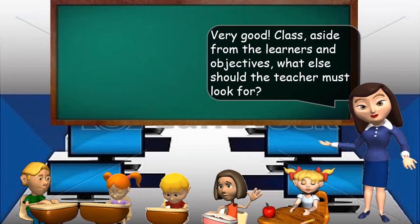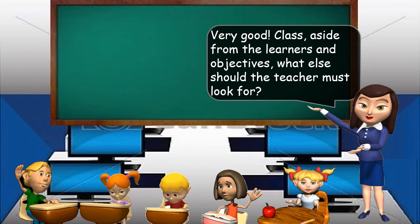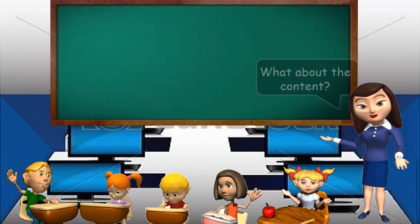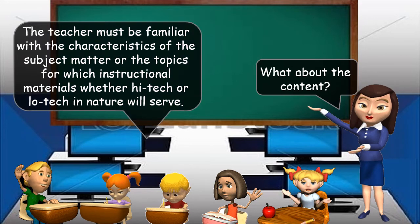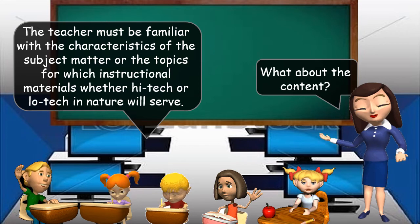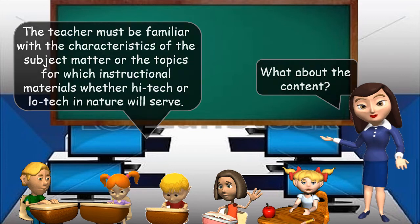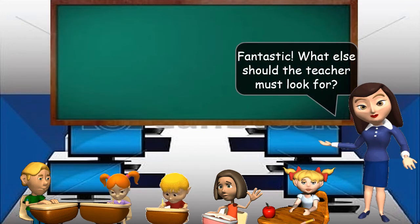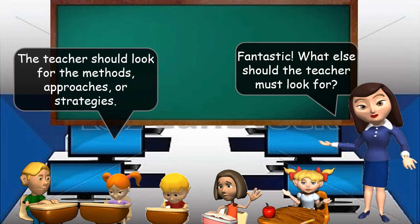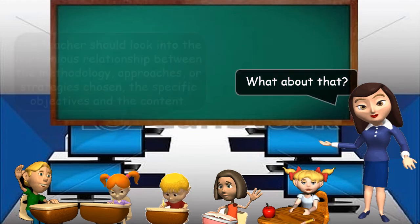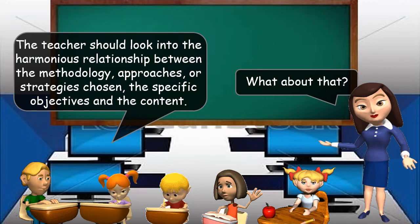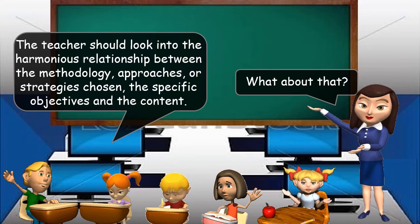Very good. Aside from the learners and objectives, what else should the teacher look for? The teacher should look over the content. What about the content? The teacher must be familiar with the characteristics of the subject matter or the topics for which instructional materials, whether high-tech or low-tech in nature, will serve. Fantastic. What else should the teacher look for? The teacher should look for the methods, approaches, or strategies — specifically the harmonious relationship between the methodology, approaches or strategies chosen, the specific objectives, and the content.